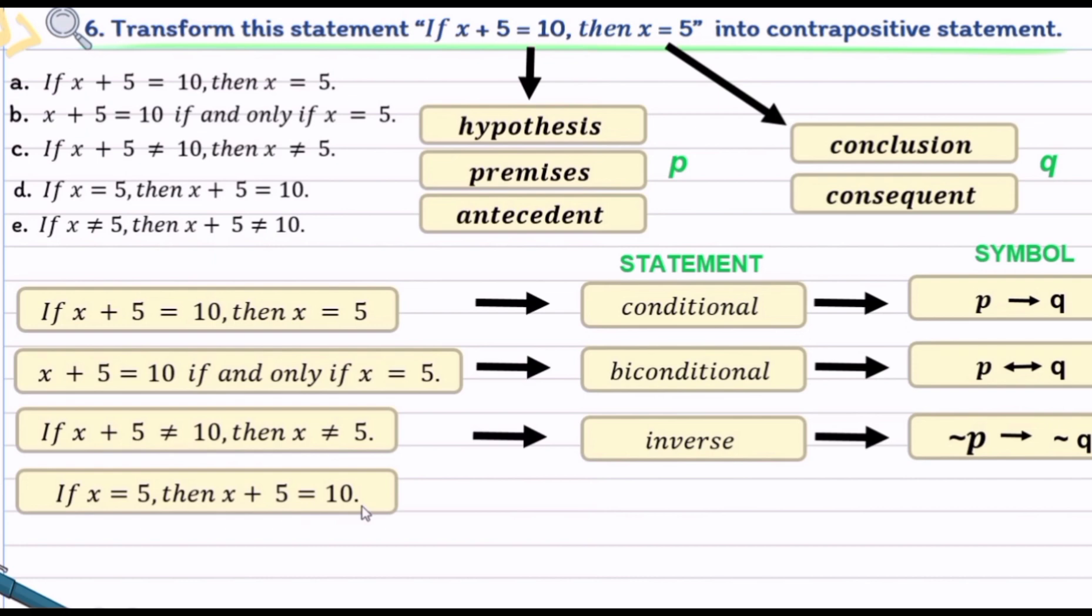Option d: if x equals 5 then x plus 5 equals 10. If you try to look at the conditional statement, the premises become the conclusion, the conclusion becomes the premises, meaning you change the order and arrangement of the statement. We call it the converse statement. If you're going to rearrange the conditional statement, premises becomes conclusion and conclusion becomes premises. In short, this is p then q, we have now q then p.